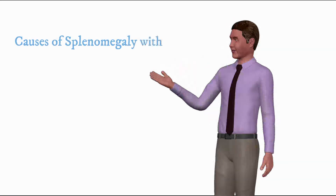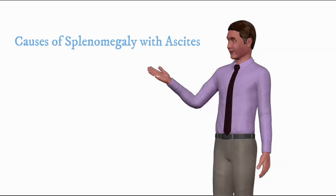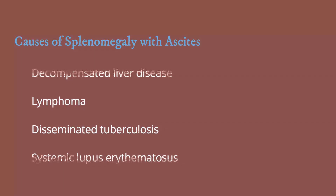Causes of splenomegaly with ascites include lymphoma, disseminated tuberculosis, and systemic lupus erythematosus.